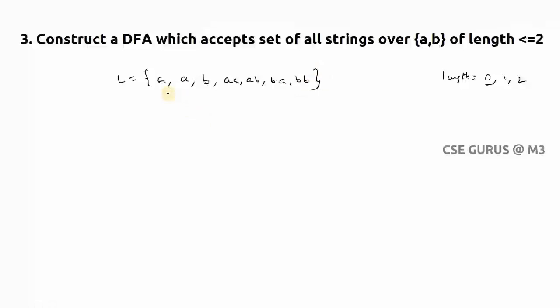So how to construct this? We'll see here. Now remember one point: if your language contains epsilon, you have to remember that your initial state must be one of the final states. You may have more than one final state, but if you have epsilon, your initial state must be a final state.